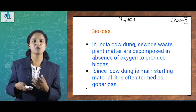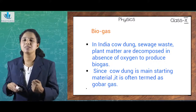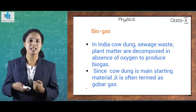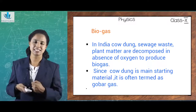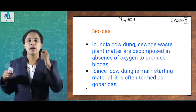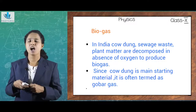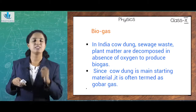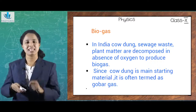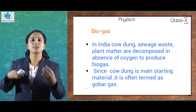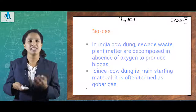You may have biogas plants in your homes, used for cooking and lighting. The biogas is mainly called 'gober gas' here because the main starting material used in producing biogas is cow dung — that's why it is termed gober gas.